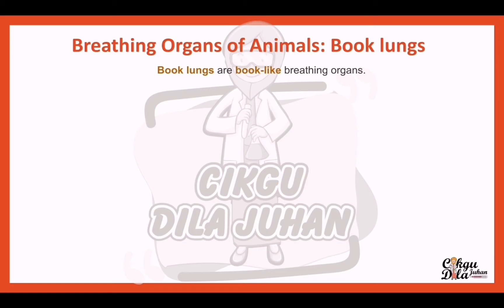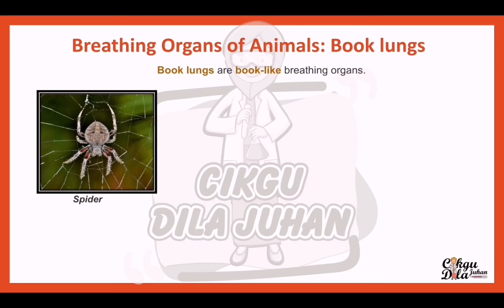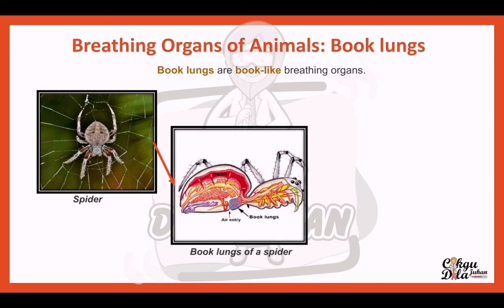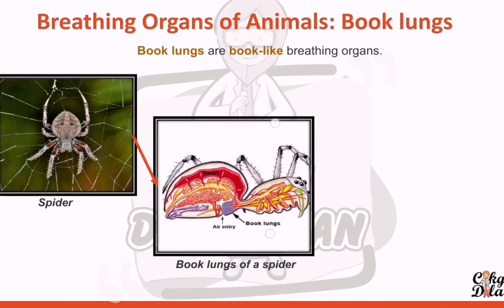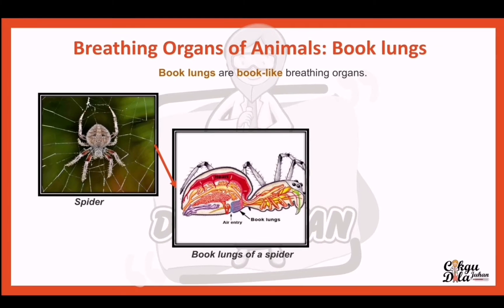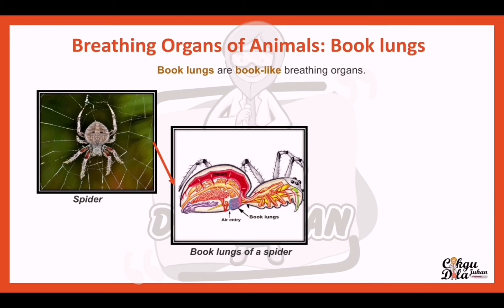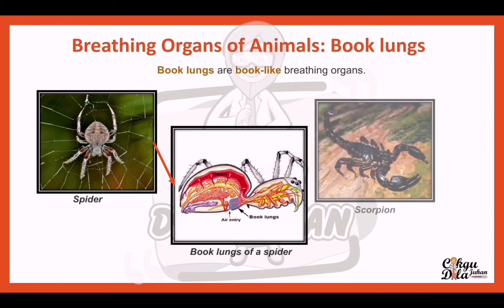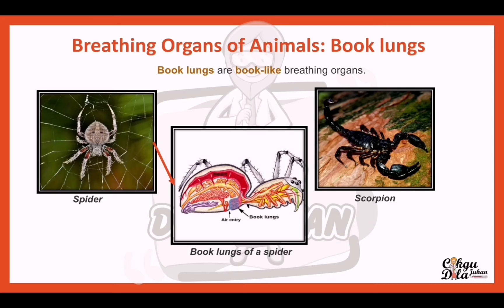The next breathing organ is book lungs. Book lungs are book-like breathing organs. Animals that have book lungs include the spider — you can see the book lungs of a spider there. This is just extra information. Another animal with book lungs is the scorpion.